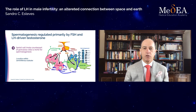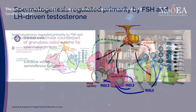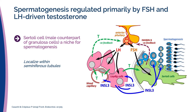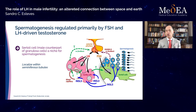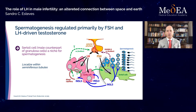The first thing we need to revisit is physiology. As you know well, spermatogenesis is regulated primarily by FSH and LH-driven testosterone. The Sertoli cell is like the male counterpart of the granulosa cells — this is the place where spermatogenesis takes place.